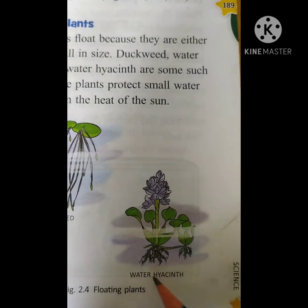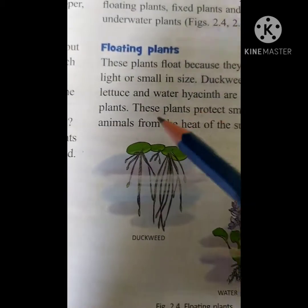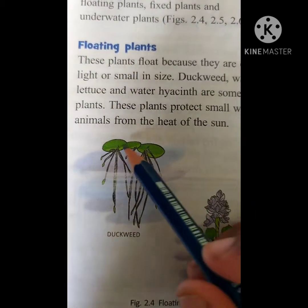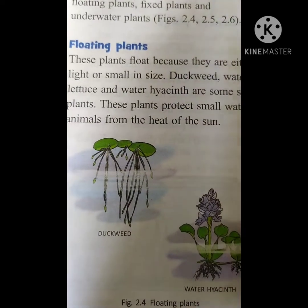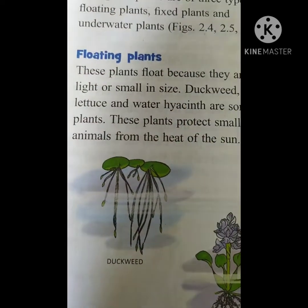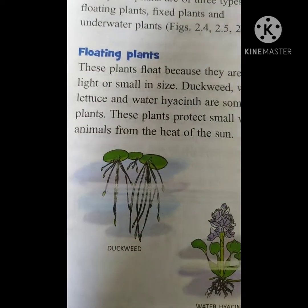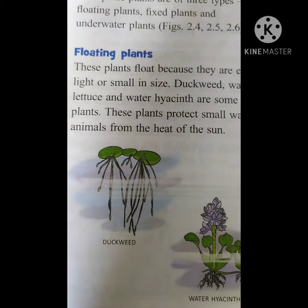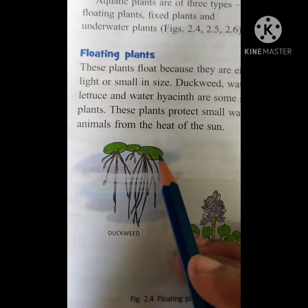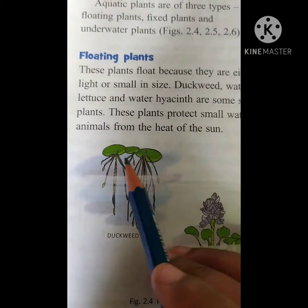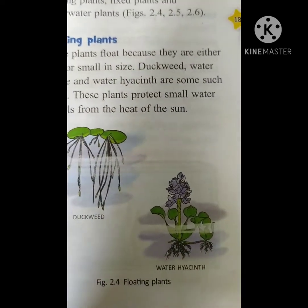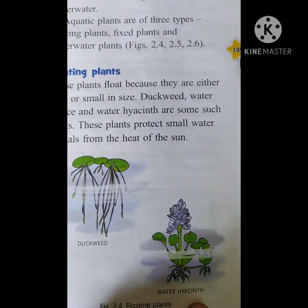This is the plant of water hyacinth and this is the duckweed. You can see the duckweed is near the pond. Most of the ponds and rivers, they are present in them. So these are the floating plants.